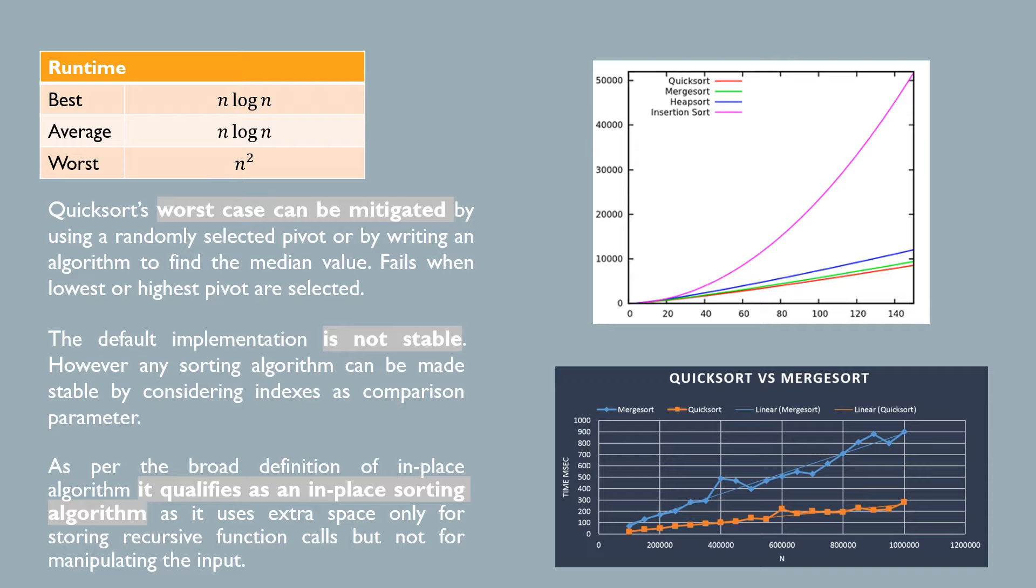The worst case instance only occurs if Quicksort's pivot is chosen to be the minimum value of the dataset or the maximum value of the dataset, which rarely occurs and can even be mitigated with more complex implementations of the algorithm.